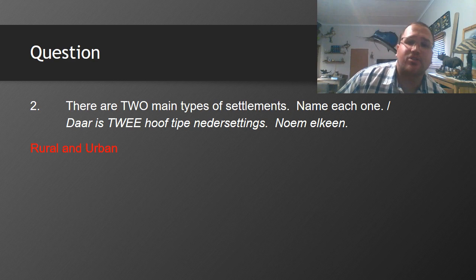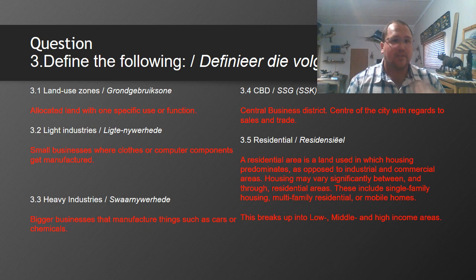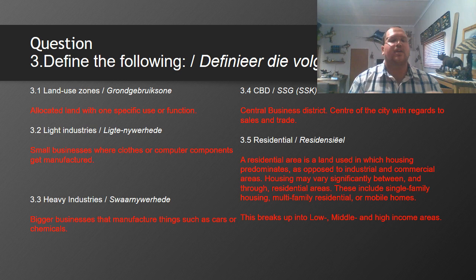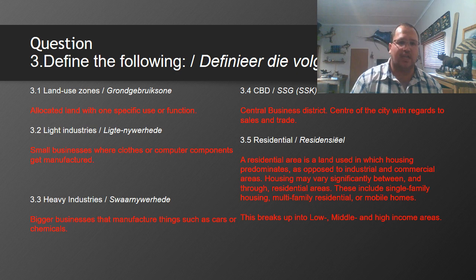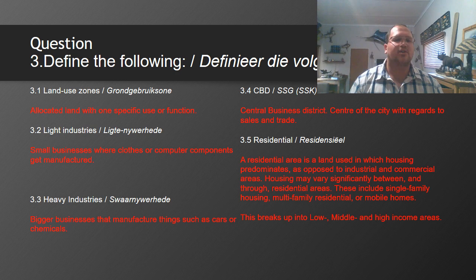Question two: there are two main types of settlements — rural settlements and urban settlements. Question three — define the following: 3.1 Land use zones are allocated land with one specific use or function. An agricultural land use zone has only farming happening in that area. Industrial land use zones are where we find things like factories, situated a bit outside of suburban areas so they don't make too much noise. 3.2 Light industry consists of small businesses where clothes or computer components get manufactured — small-scale factories.